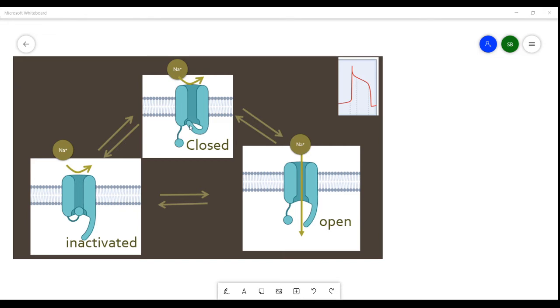This gate is opened and closed by the transmembrane voltage. At very negative potentials the gate is closed. It's opened as the potential becomes more positive.